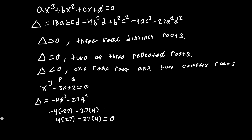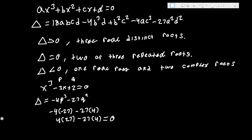Here we notice this does not have 3 repeated roots because b = 0 in this case. So x = -b/(3a) does not apply. We have to factor it out. The solutions to this cubic are x = 1 and x = -2.